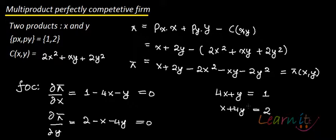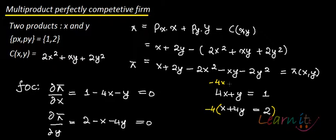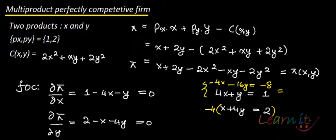To solve these two equations simultaneously, we multiply the second equation by minus 4 to get minus 4X minus 16Y = minus 8. Adding this to the first equation gives minus 15Y = minus 7, so Y = 7/15.